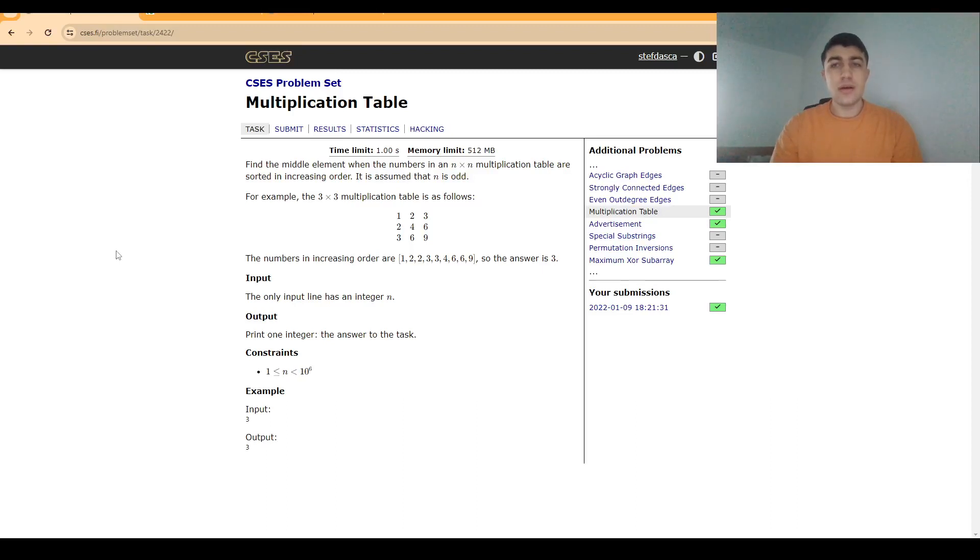Hello everybody, today I'm going to explain the solution to the problem multiplication table from the CSS problem set. In this problem we are given a number n and we are also given a grid of size n.